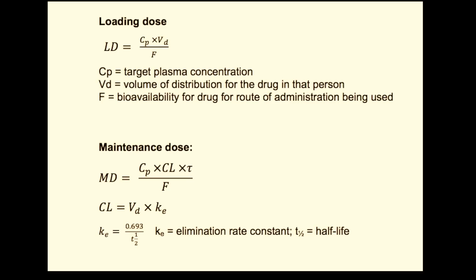To summarize: loading dose is defined as the target plasma drug concentration times the volume of distribution, divided by the bioavailability for that route of administration. Maintenance dose is the target plasma concentration times clearance times the dosing interval, all divided by the bioavailability. Clearance equals volume of distribution times the elimination rate constant, and the elimination rate constant equals 0.693 divided by the half-life of the drug.